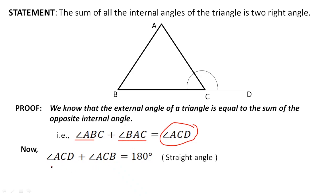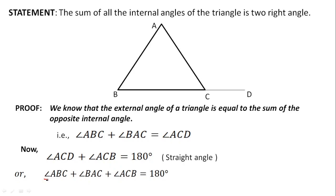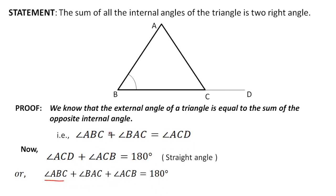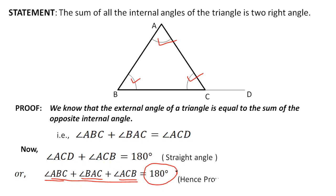We already know that angle ACD equals angle ABC plus angle BCA. Now I'll replace angle ACD with this value. Angle ACD is replaced by angle ABC plus angle BCA, because they are equal, and angle ACB is written as it is. So finally, what we get is: angle ABC plus angle BCA plus angle ACB equals 180 degrees. These are all three internal angles of the triangle, and when they are added we get 180 degrees. This is how we prove the theorem.